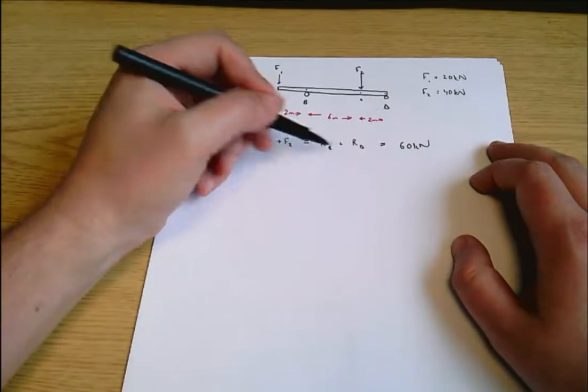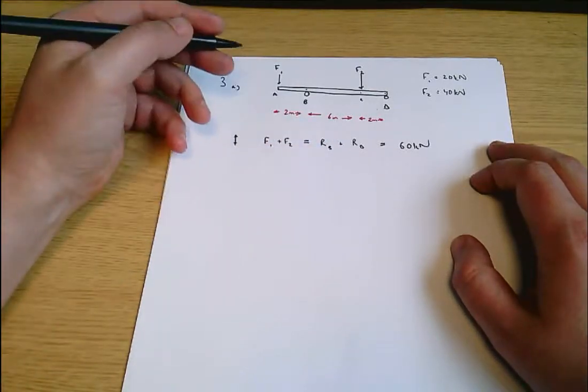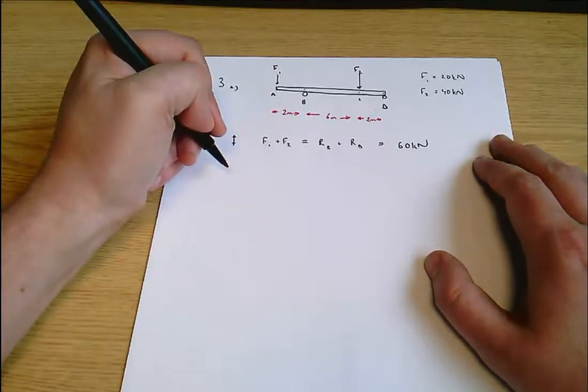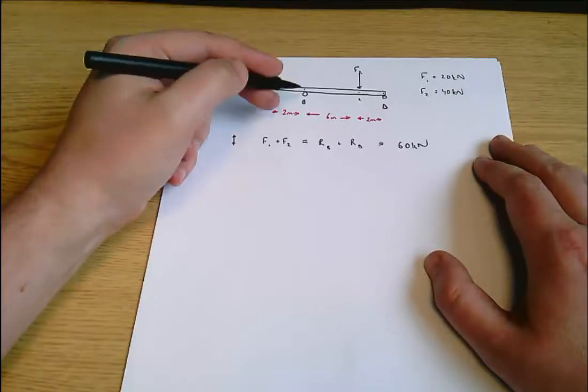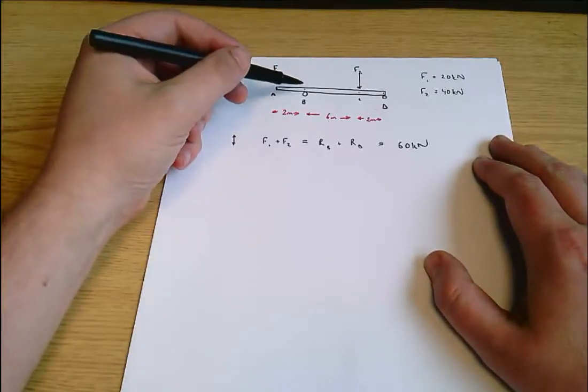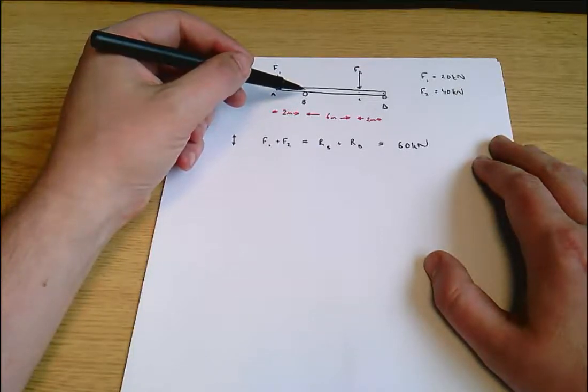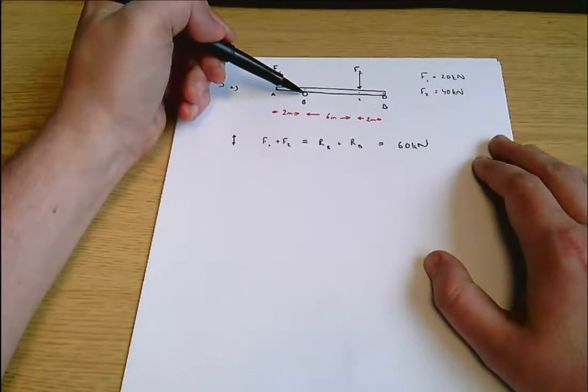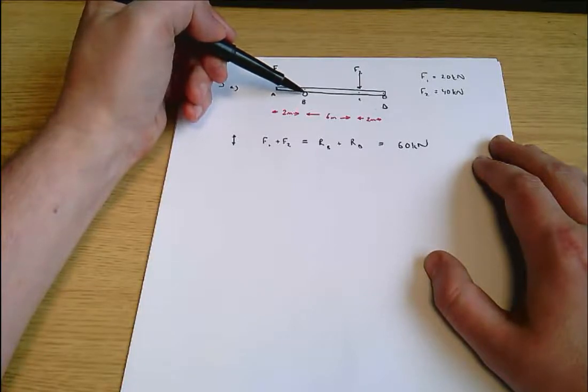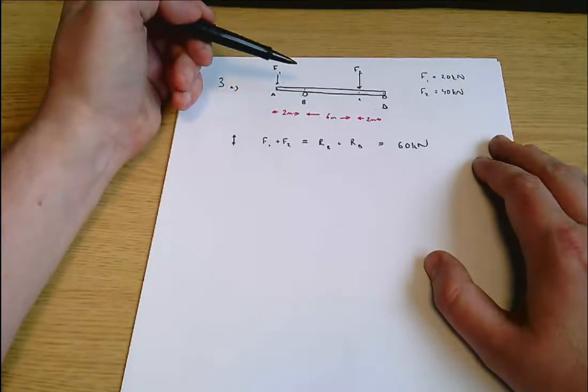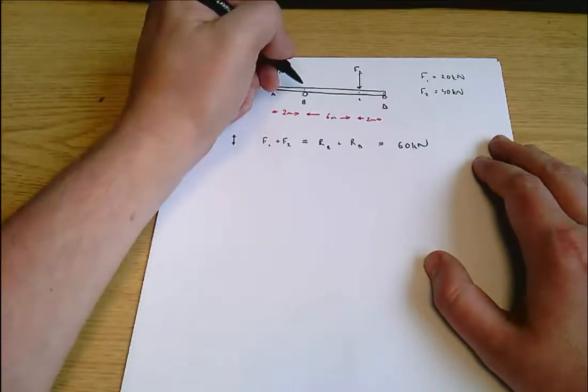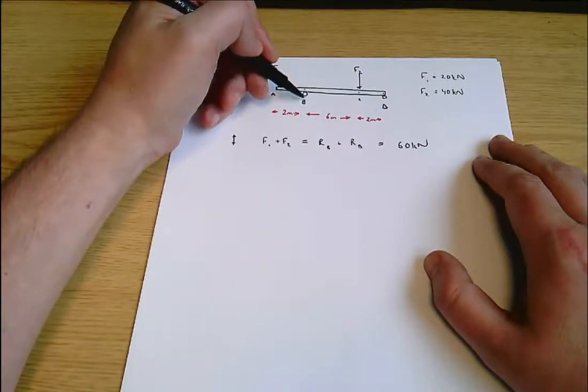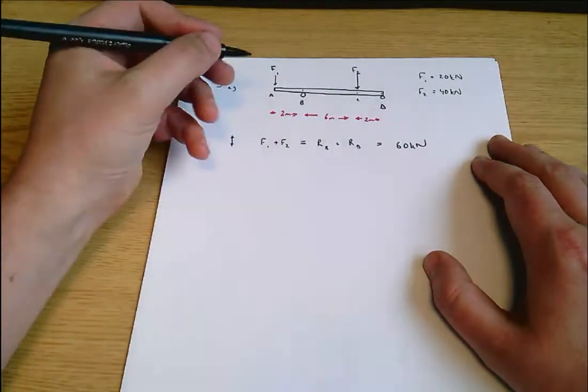But that's not quite enough because we don't know how much of that is the reaction at B and how much is the reaction at D. So we have to think about moments. When we take moments in any problem like this, what we want to do is eliminate one of the unknowns and just leave ourselves with the other unknown. If we take moments about the point at B, the reaction at B is zero distance away, so this force creates zero moment. That's what I'm going to do.